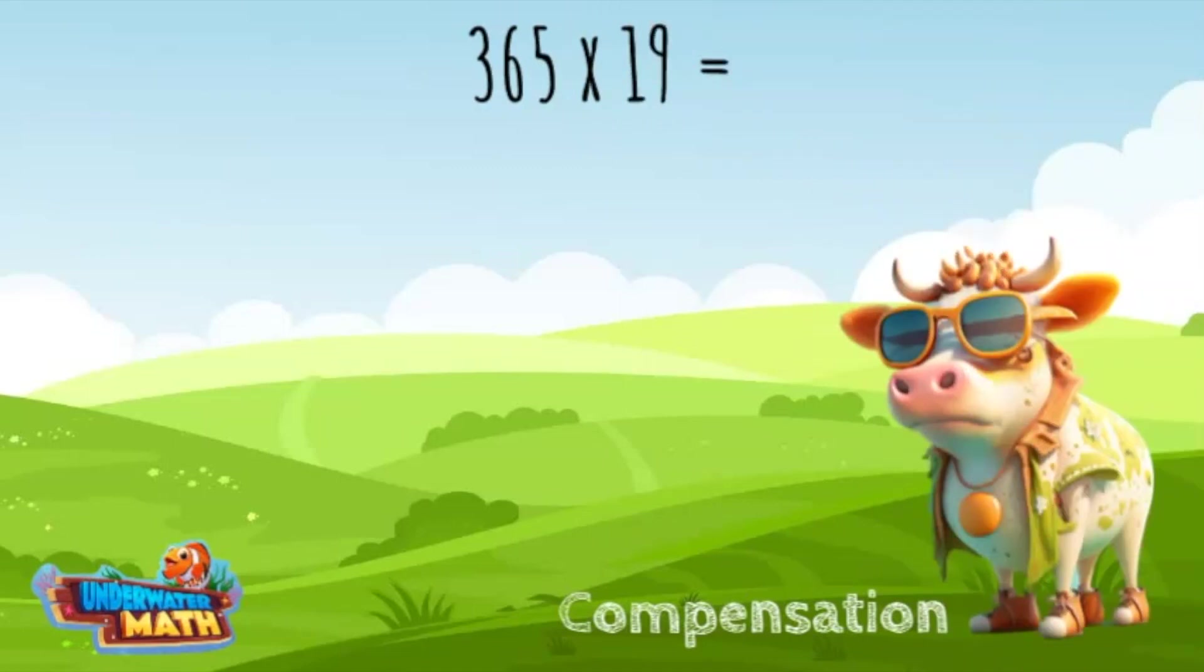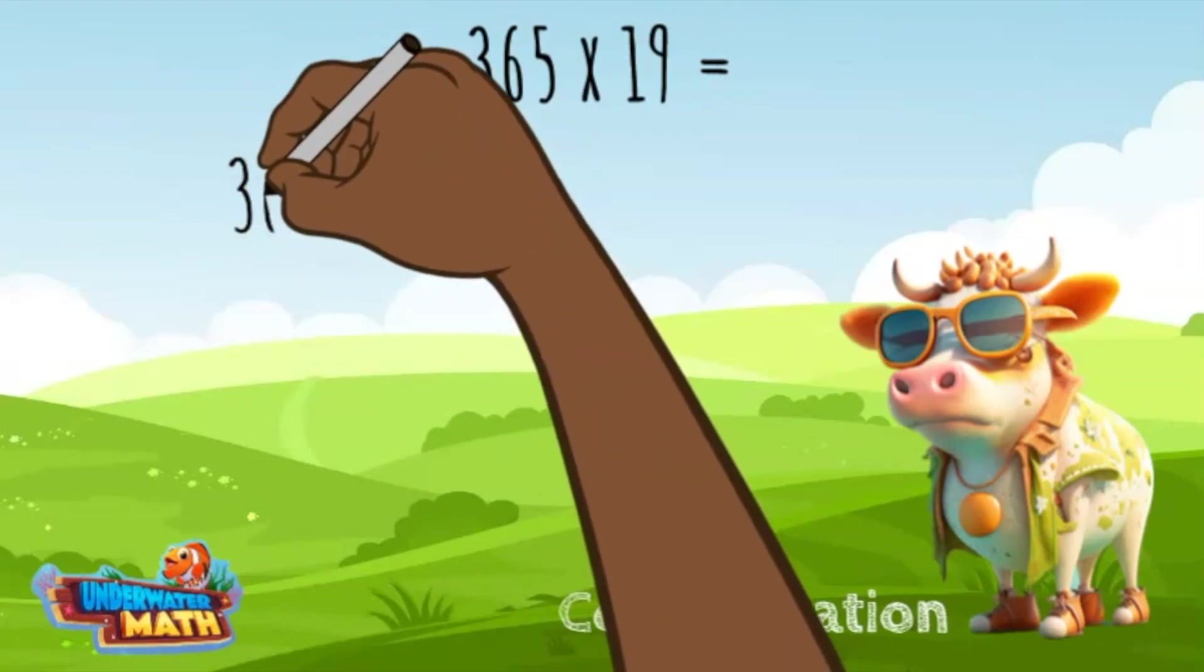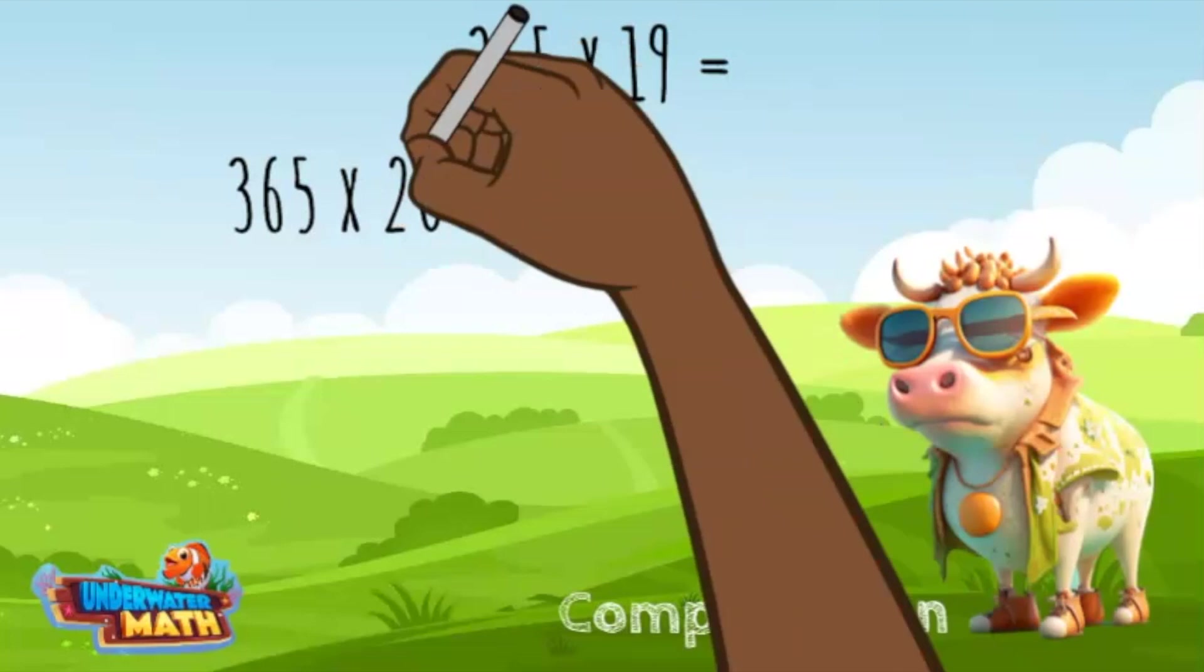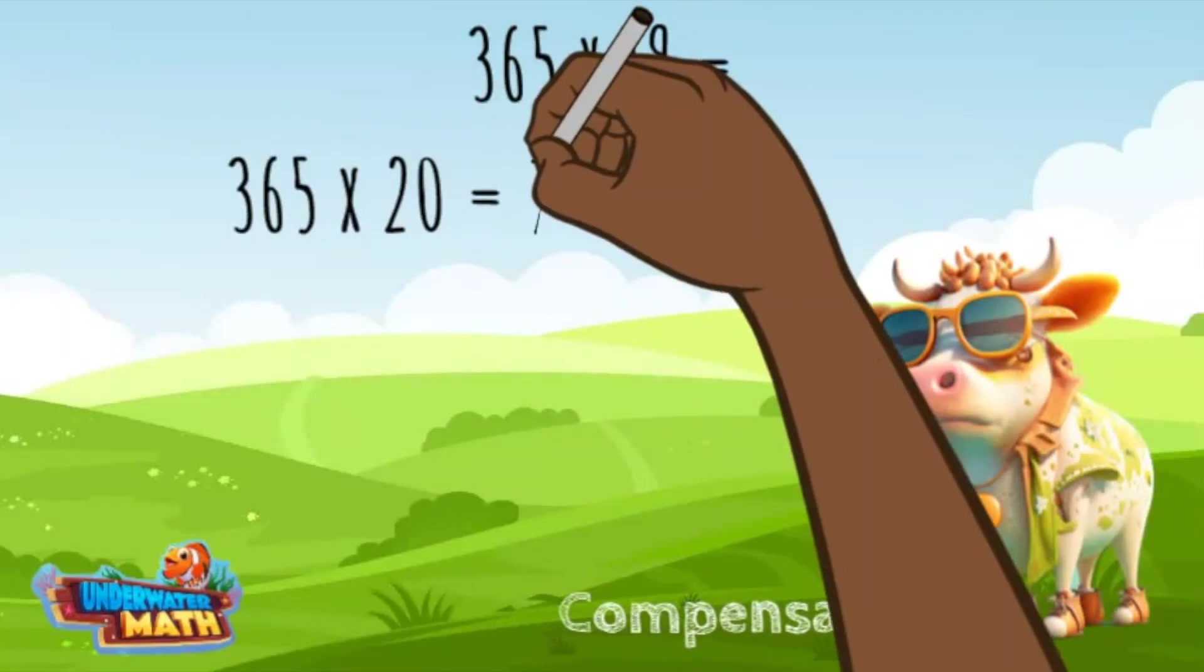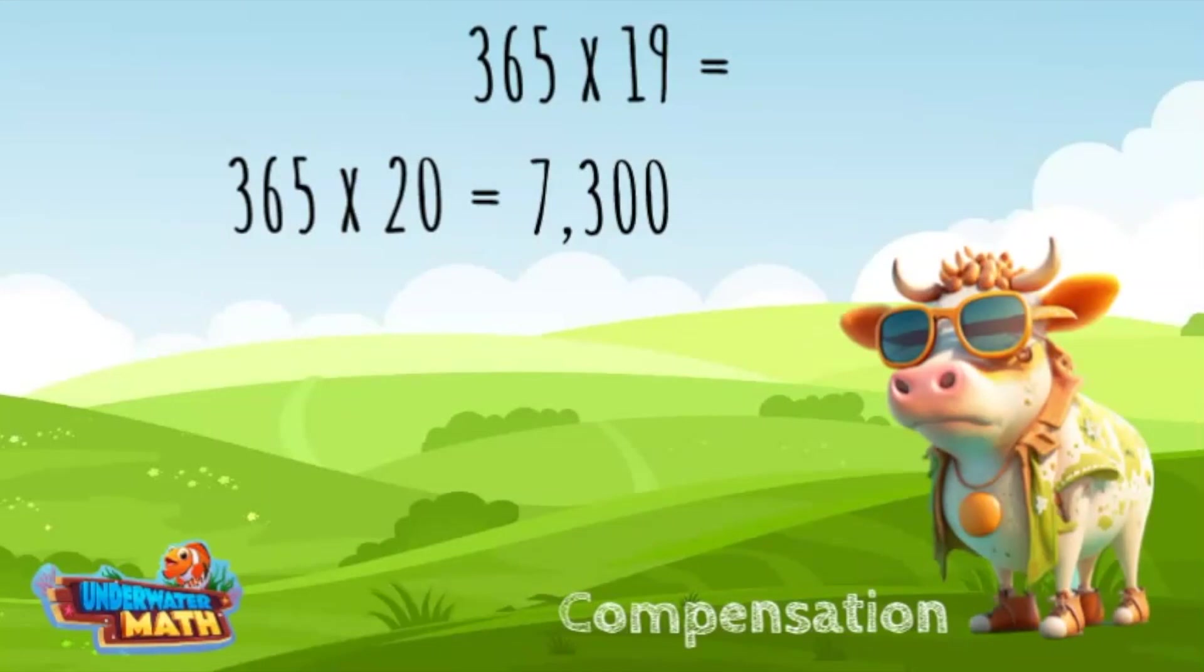So instead of multiplying 19 groups of 365, we are going to find the product of 20 groups of 365. 365 times 20 is 7300. Now we need to take away one group of 365 to find the answer for 365 times 19.